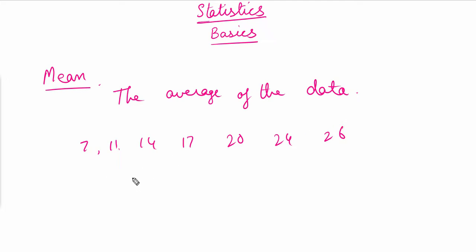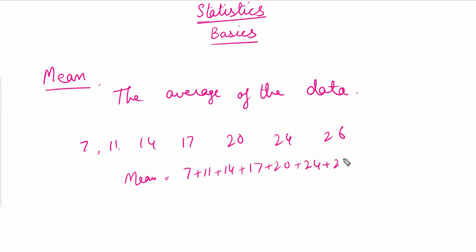So it will be: mean is equal to 7 plus 11 plus 14 plus 17 plus 20 plus 24 plus 26, and we divide all of these numbers by 7 to get the mean. This is how we find the average of the numbers.